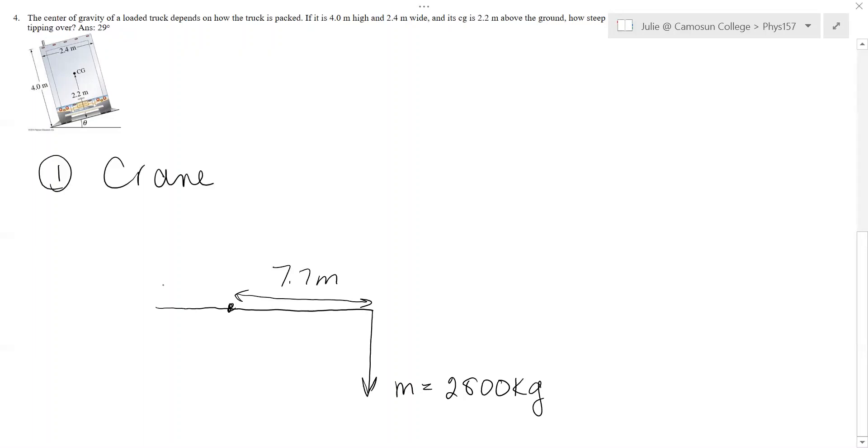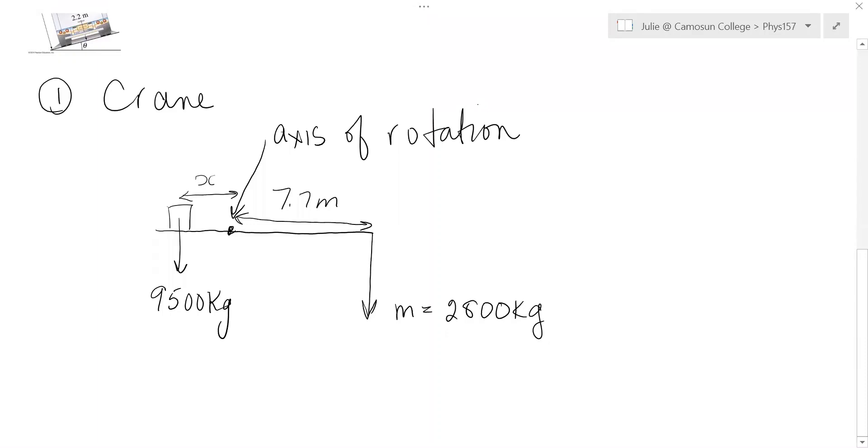The mass is 2800 kilograms and the distance from this center bar out to that mass is 7.7 meters. And then the question is where do we put the counterweight over here. So this is an unknown distance x. And it has a mass of 9500 kilograms so much heavier so it can be much closer to the axis of rotation than the refrigerator. And so this is our axis of rotation. Now once you've decided the axis of rotation you have to stick to it for the whole problem.